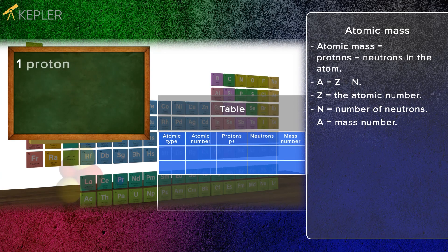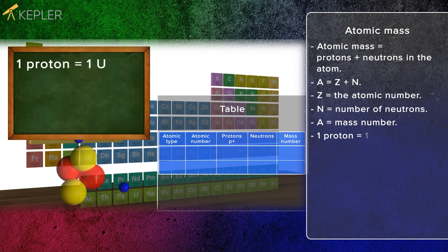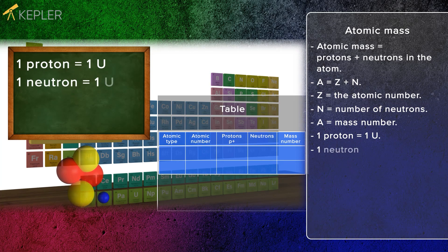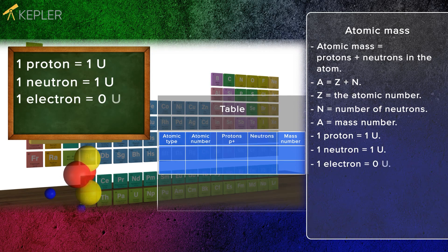One proton weighs one U, and one neutron also weighs one U. The electron's mass is so small that it is not included.